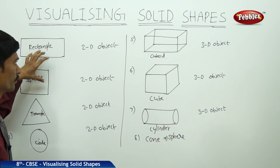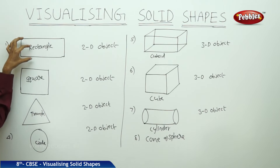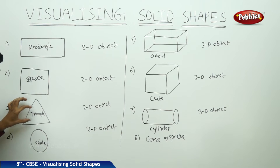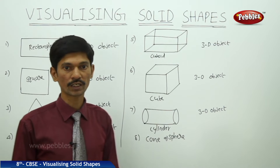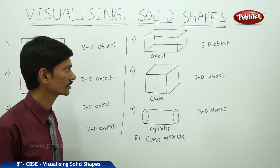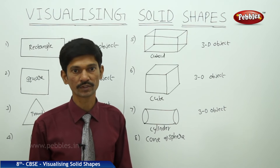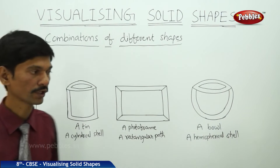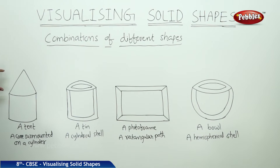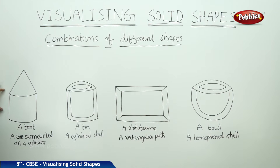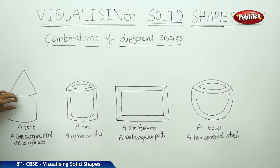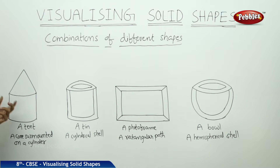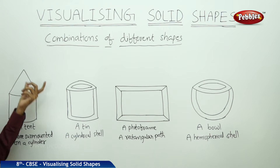In our day-to-day life, we come across figures that are combinations of two different shapes. In the first figure — a tent — we can observe a cylindrical shape with a conical shape over it. So this is the combination of two different solid shapes: one is a cylindrical shape and the other is a conical shape. A cone surmounted on a cylinder.